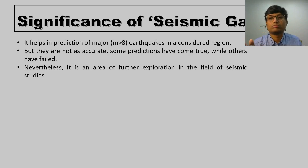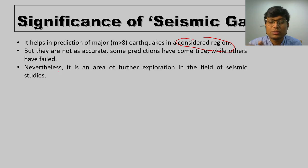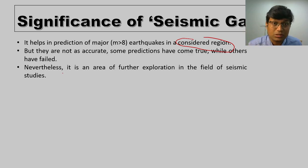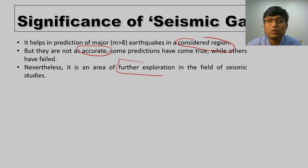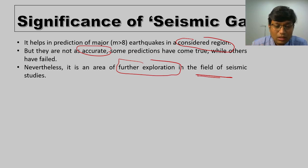The seismic gap theory helps us in prediction of a major earthquake in the considered region. However, these predictions are not as accurate as we expect them to be. Not necessarily every 40 years will a particular segment of the plate boundary experience a major earthquake — that is not a necessity. That is why it is still under intense study and is a field of further exploration. Though it alerts us in a certain sense, it is not very accurate for predicting earthquakes along plate boundaries.